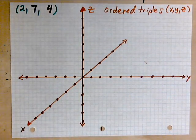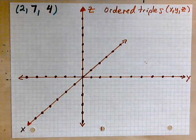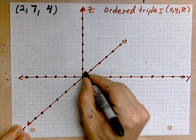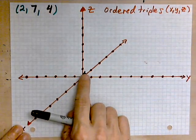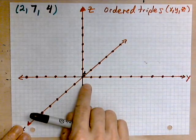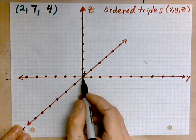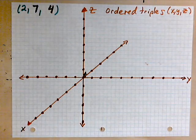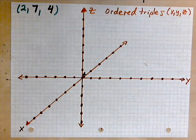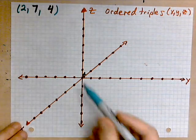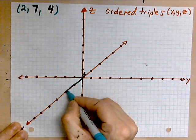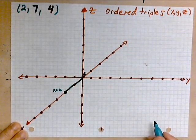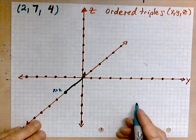Let's mark this point. The way to do it is this: imagine you're a little dude standing at the origin of the coordinate system. This is what you're going to do to reach this point. Go 2 along the x-axis — 1, 2 along the x. This is x equals 2. Then you turn and you go 7 along the y-axis.